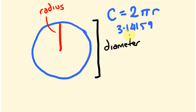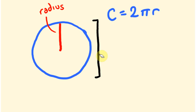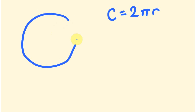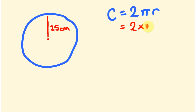I'm going to work out the circumference of a couple of different circles and a couple of different types of questions you might get asked. So, say I have a circle and I know that the radius is 25 centimetres — the radius from here to here is 25 centimetres. We're asked to find what the circumference is, what the perimeter is. The formula we're going to use is circumference equals 2 times pi times r, so the circumference equals 2 times pi times 25 centimetres.